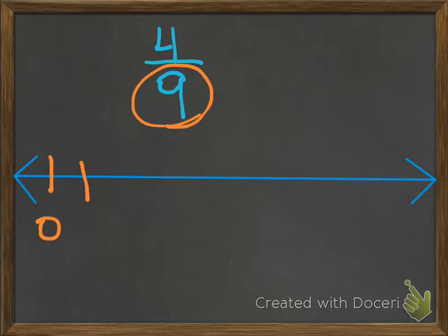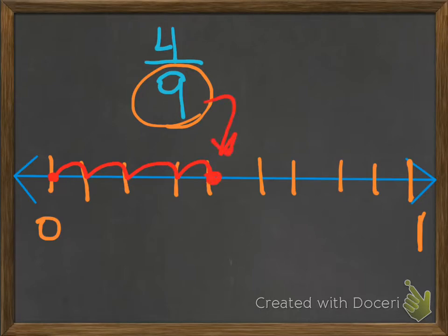We start off with 0. We have 1, 2, 3, 4, 5, 6, 7, 8, and 9. That's our whole. In this case, we're going to go to 4/9. We start here at 0 and count 1, 2, 3, 4. That is our 4/9.